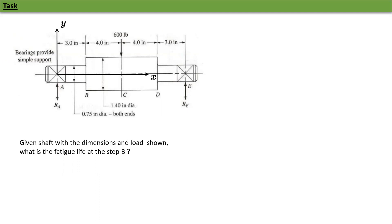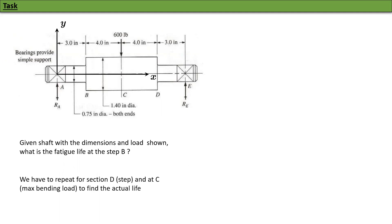That's how it works. We may have to repeat whatever we are doing for section B, section C — not just that one step, but also the point where the bending load is maximum, as well as the other step. We'll have to do all of that to complete a full calculation. Right now we are going to focus only on step B.